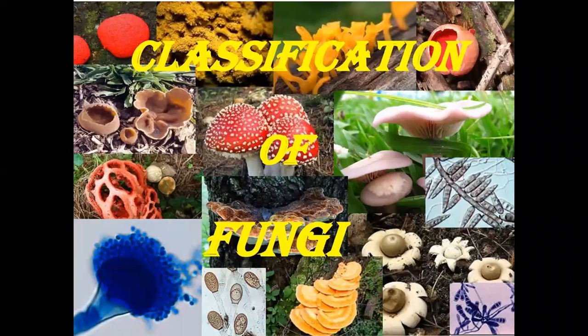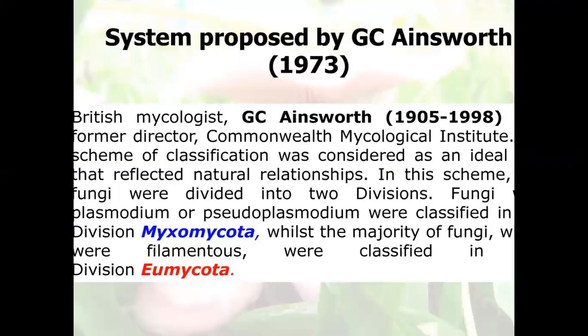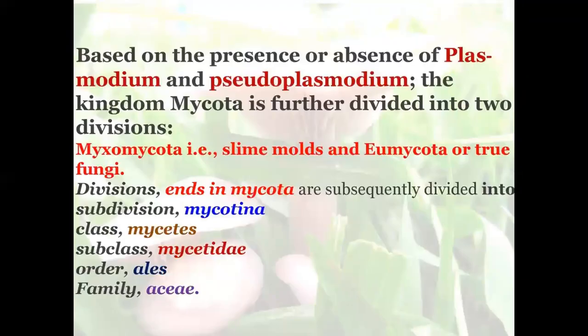Classification of Fungi system proposed by G.C. Ainsworth in 1973. British mycologist G.C. Ainsworth (1905–1998), former director of the Commonwealth Mycological Institute, proposed a scheme of classification considered ideal as it reflected natural relationships. In this scheme, Fungi were divided into two divisions: Fungi with Plasmodium or Pseudoplasmodium were classified into division Myxomycota, while the majority of filamentous Fungi were classified into division Eumycota.